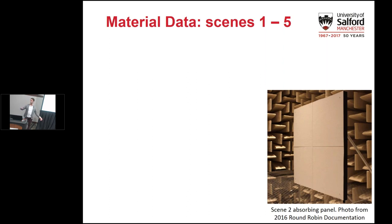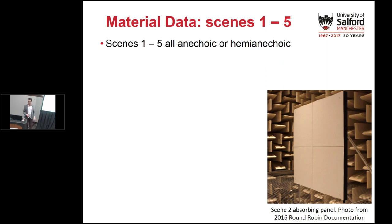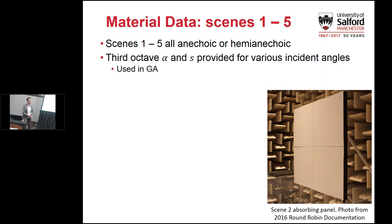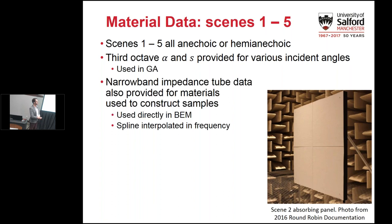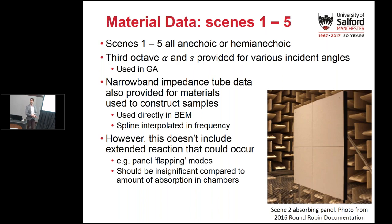For material data, the round robin has captured some of the best and most detailed absorption material data available. Scenes one to five are all anechoic or hemi-anechoic; third-octave absorption and scattering coefficients were provided and used in geometrical acoustics. Narrow-band impedance tube data was also provided for the materials used to construct the samples in these scenes, and we used that directly in BEM. This doesn't include extended reaction behavior, so if panels are moving in flapping modes that wouldn't be included — but it's probably insignificant compared to the total absorption in the anechoic chambers.